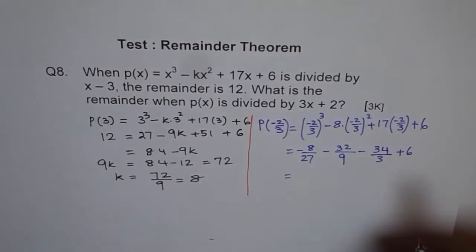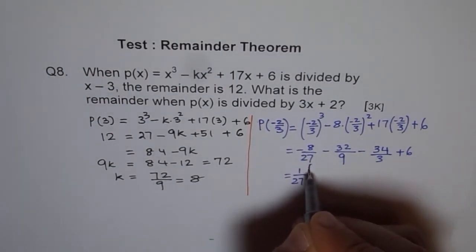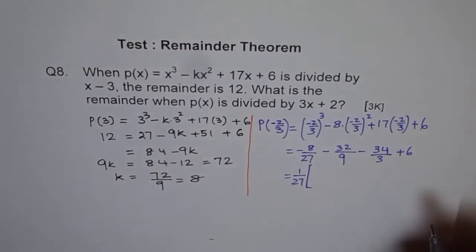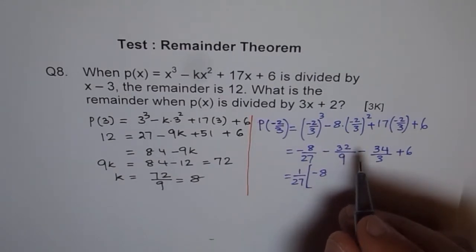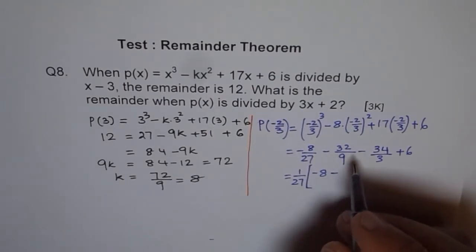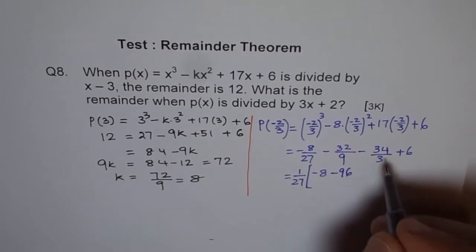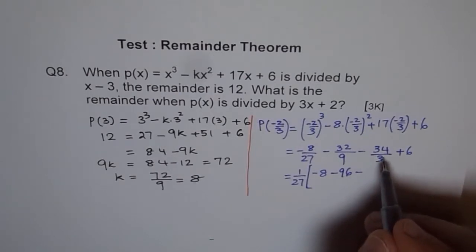Now to simplify this, what we can do is we can take 1 over 27 outside, and we will get minus 8 here. This will be 3 times this, so 3 times 2 is 6, 3 times 3 is 9, so it is 96. And this will be 9 times, so 9 times 4 is 36, 9 times 3 is 27 and 3 is 30, so 306.